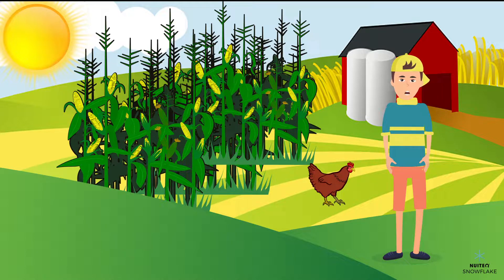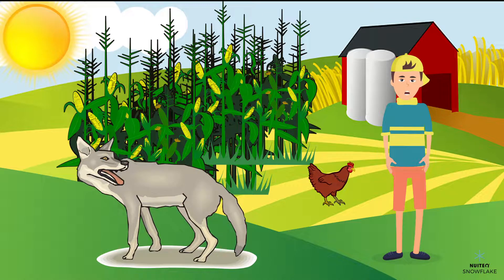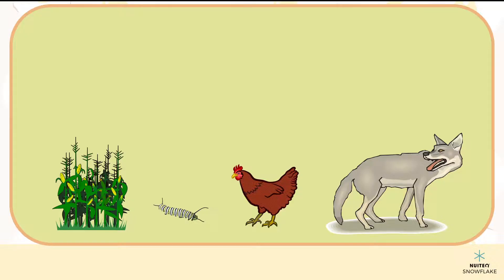Occasionally, a coyote might sneak into the farm and get a chicken. Coyotes get their energy from eating other animals, so they are considered carnivores. Whether a living thing is eating a plant, an animal, or both, the food had once gotten its energy from the sun.